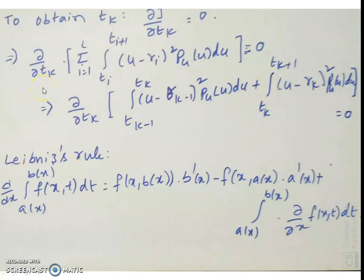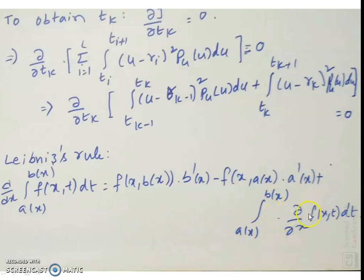We need to differentiate with respect to the limits of integration. We do that using the Leibniz rule, which says: d/dx of the integral from a(x) to b(x) of f(x,t) dt equals f(x, b(x))·b′(x) minus f(x, a(x))·a′(x) plus the integral from a(x) to b(x) of ∂/∂x of f(x,t) dt.